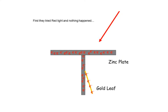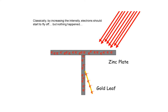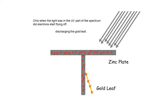First they tried red light and nothing happened. Classically, by increasing the intensity of the red light, electrons should start to fly off, but nothing happened. Only when light was in the UV part of the spectrum did electrons start to fly off, and eventually this discharged the gold leaf.